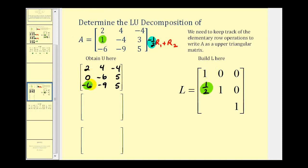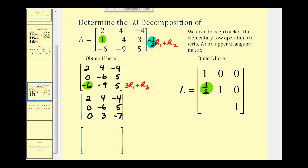To obtain a zero in the row three, column one position, let's replace row three with three times row one plus row three. The first two rows stay the same. For the third row: three times two plus negative six is zero; three times four plus negative nine, or twelve plus negative nine, is positive three; and three times negative four is negative twelve plus five, which is negative seven. Our multiplier is positive three, which helped us obtain a zero in row three, column one, so the corresponding element in the lower triangular matrix is the opposite of positive three, or negative three.